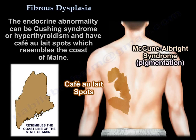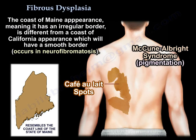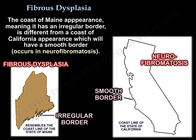The café au lait spots have an irregular border, like the coast of Maine, which is different than the coast of California appearance — which has a smooth border — as seen, for example, in neurofibromatosis.